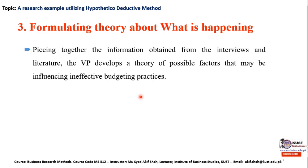In the third step, the vice president formulates a theory about what is happening. The VP pieces together information obtained from the interviews and literature and develops a theory of possible factors that may influence ineffective budgeting practices. Using insights from interviews and the literature survey, the vice president tries to formulate a theory in which possible factors may influence each other in a positive or negative fashion.